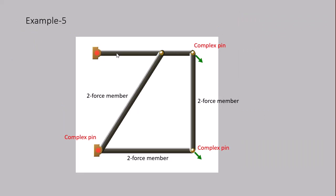In this example, we have four members and two complex pins. Three of these members are two-force, only one is multi-force. So we draw four free body diagrams for the members and three more for the complex pins — seven free body diagrams in total.